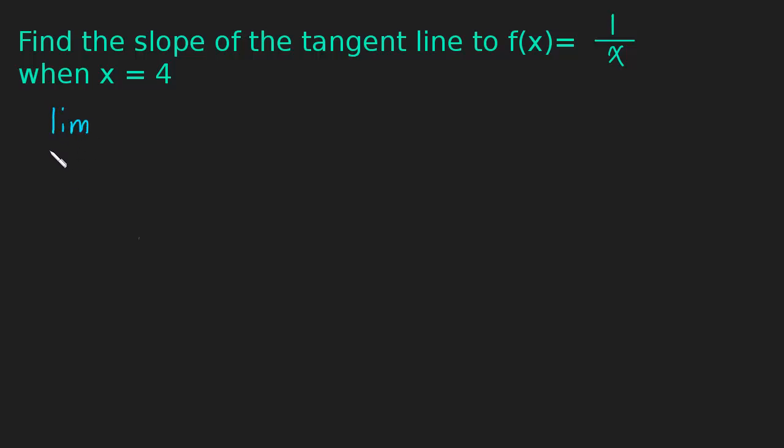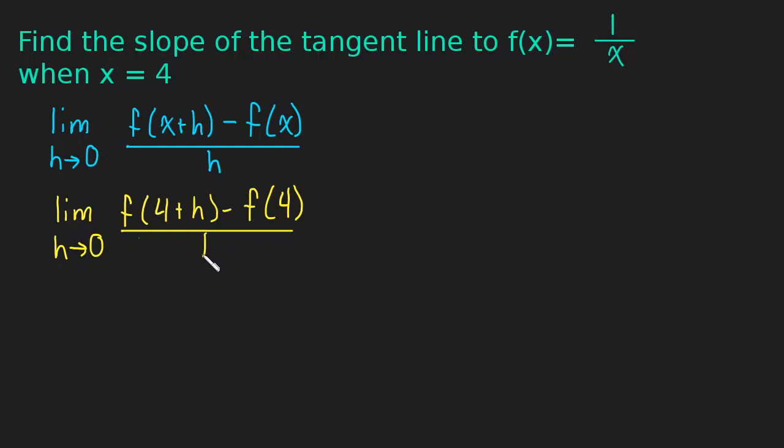We're going to have the limit as h approaches 0 of f of x plus h minus f of x, all divided by h. And we're going to start just like we started every other one. We're going to plug 4 in for x and then work from there. So this is going to be the limit as h approaches 0 of f of 4 plus h minus f of 4, all divided by h.